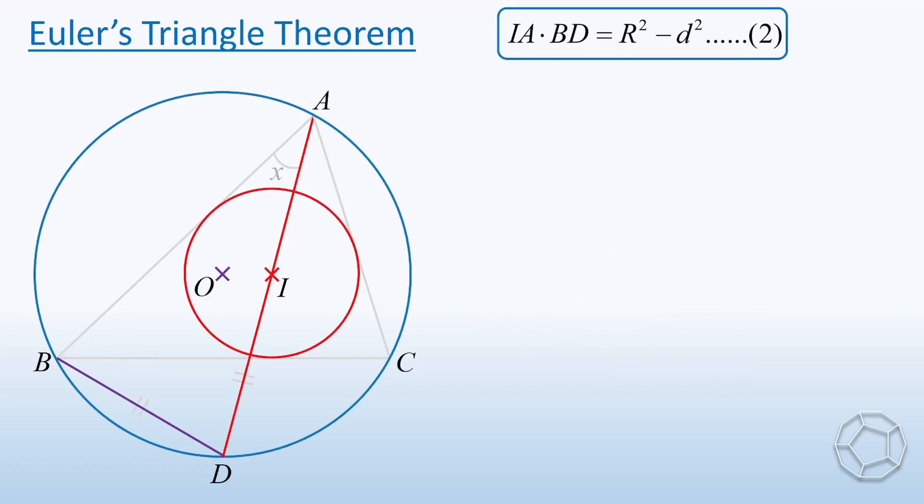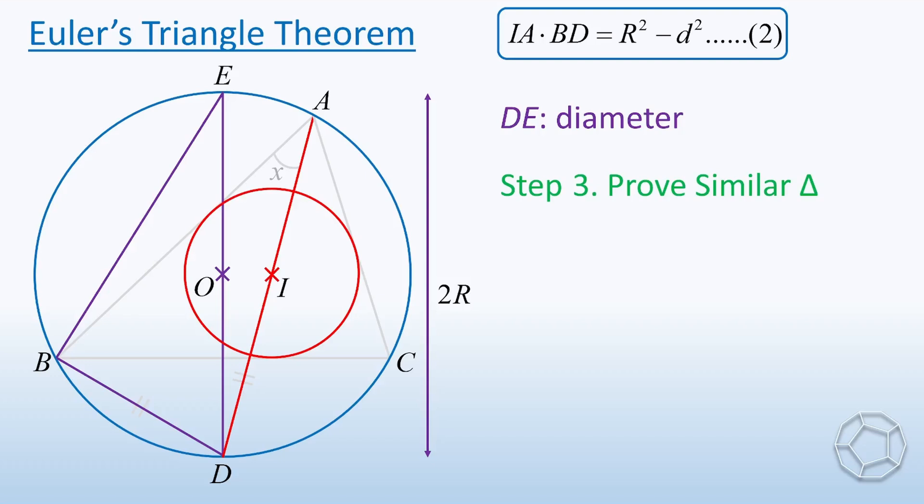We draw the side DO and extend it to the blue circle as E. So DE is a diameter with length 2R. Let's join the points B and E to get this purple triangle. In step three, we have to prove another pair of similar triangles. Then, which two triangles should we look at?